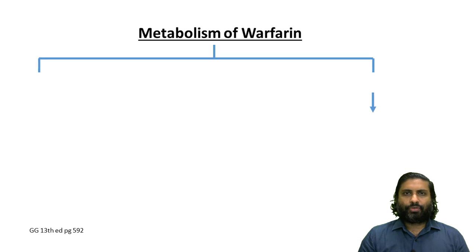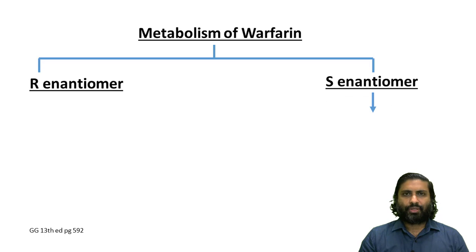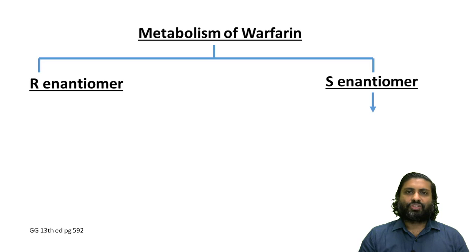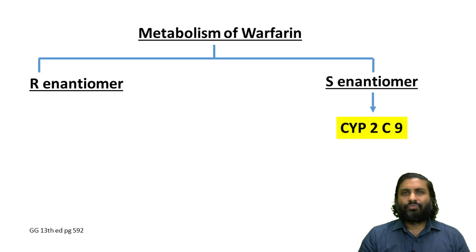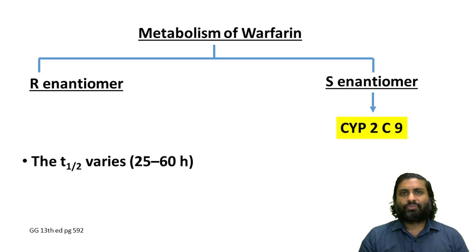Regarding the metabolism of warfarin, it helps to understand that warfarin is a racemic mixture of S-enantiomers and R-enantiomers. The S-enantiomer is around five times more potent than the R-enantiomer, and therefore its metabolism is of greater significance. The S-enantiomer of warfarin is metabolized by CYP2C9. The half-life of warfarin can vary from around 25 to 60 hours, and the duration of action varies from around two to five days.